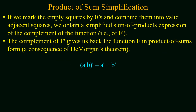Now if we mark the empty squares by zeros and combine all the zeros using the laws of adjacent squares and form the function, we will have the function f complement, because the function represents all the zeros in the map. Now if we again take the complement of f prime, we will get the original function f, but now this function will be in the form of product of sum due to De Morgan's theorem.